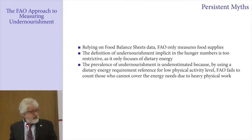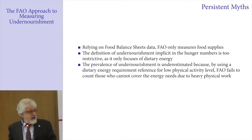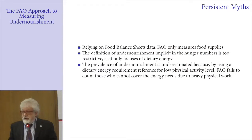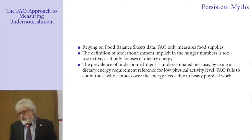The third myth is that because the prevalence of malnutrition uses a dietary energy requirement reference computed for a low physical activity level, the FAO measure must fail to count those engaged in heavy physical work who may be undernourished even if they eat relatively high levels of calories. If the FAO methodology actually fell into this mistake, that would be a big problem. The truth is that it does not.